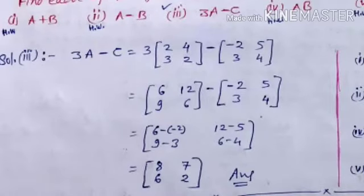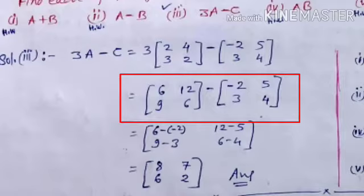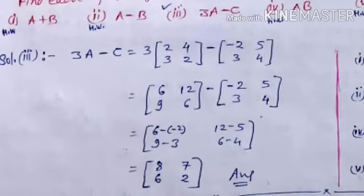Now we find the difference of these two matrices. First element subtracted by first: 6 minus minus 2 is 8. 12 minus 5 is 7. 9 minus 3 is 6. And 6 minus 4 is 2. So this is our answer: [8, 7; 6, 2].